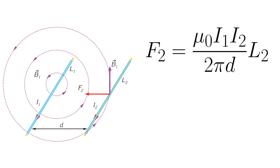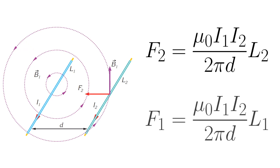Now before we start, it will be useful to recall the topic from the last lesson. We know that if two current-carrying conductors are close to each other, they will feel a force of attraction or a force of repulsion, and the magnitude of that force can be calculated using this equation.